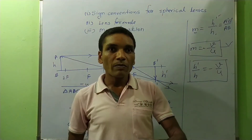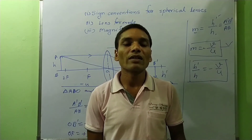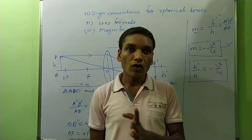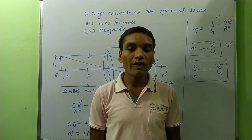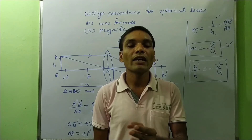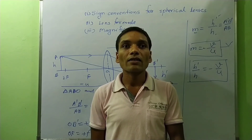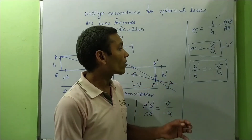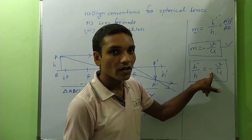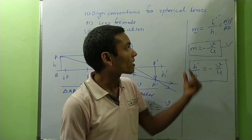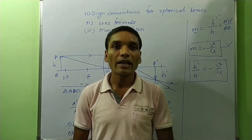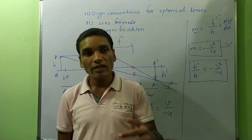You must remember that the magnification of a lens — whether convex or concave — is always negative. The negative sign in the magnification formula indicates that the image formed by a lens is always inverted relative to the object.